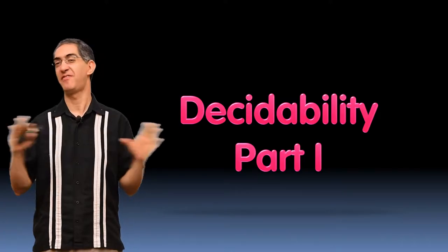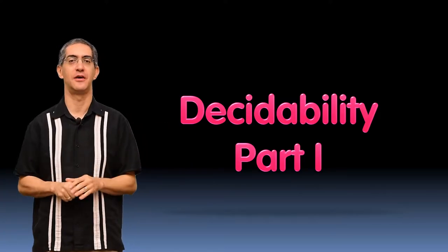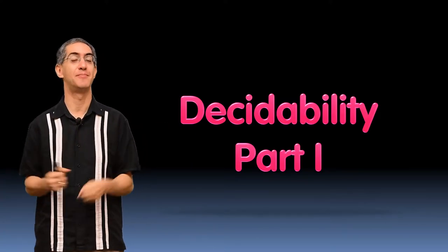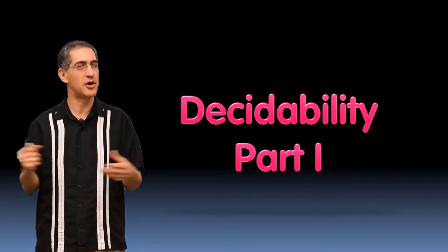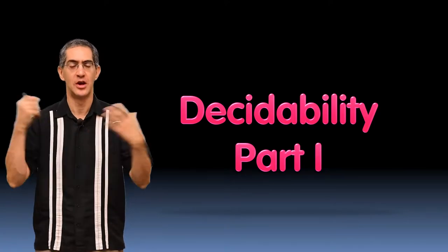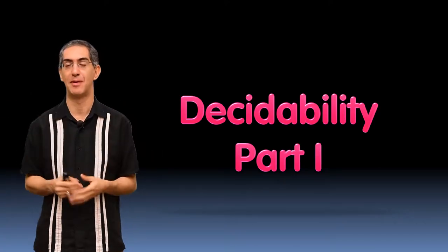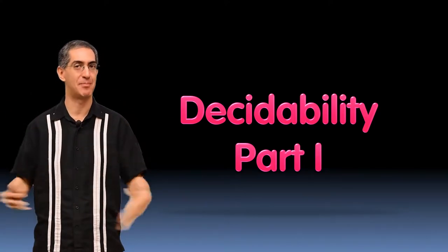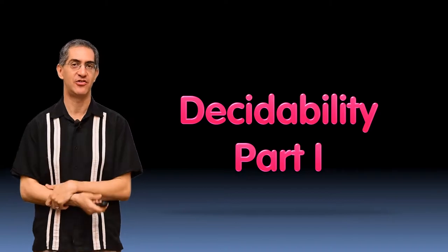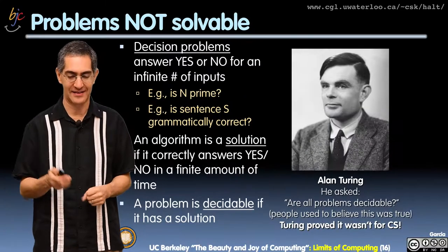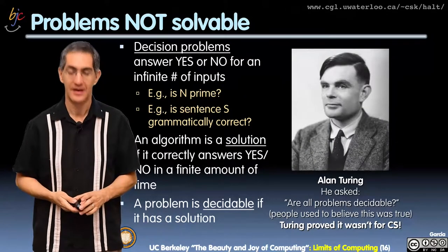All right, welcome back. We're here for the final lecture on complexity theory on decidability. This is often really hard for many students, so we'll show you some examples in SNAP. I'm really proud that SNAP is able to share with you somehow how cool this idea is.